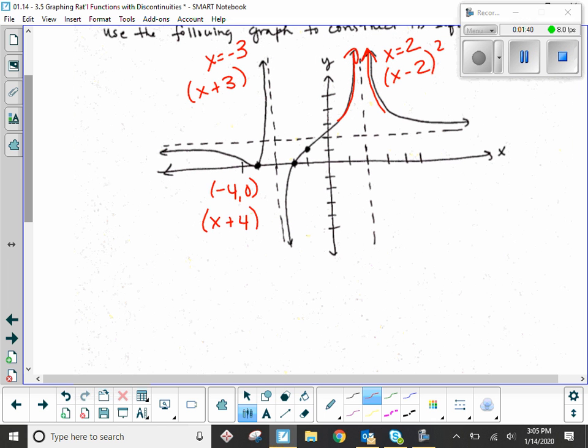Is it bouncing or crossing there? Bouncing. So what does that mean, squared or not squared? Squared. What's the T word for bounce that's on your Schrader sheet? Tangent. Right. It's tangent at that point, so it's squared.